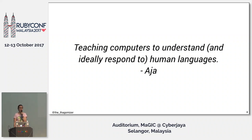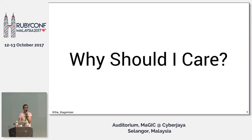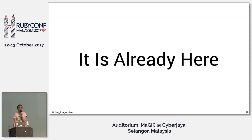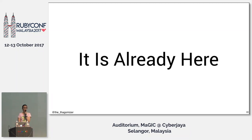Human languages are things like English, Japanese, Chinese, American sign language, British sign language — basically any language that humans use to communicate with each other. So why should I care? The big reason is it's already here. NLP has been here for decades. When you call up an airline and try to use a voice-activated phone tree, and you're sitting there screaming 'reservations, reservations, reservations' and it's only sort of understanding you — that's really bad NLP.